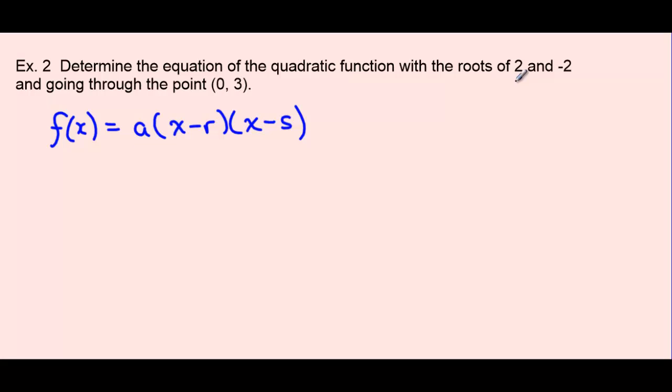And because we know our two roots here of 2 and negative 2, we'll put those into our brackets right away. So a(x minus 2)(x plus 2). So you can write them in whatever order.